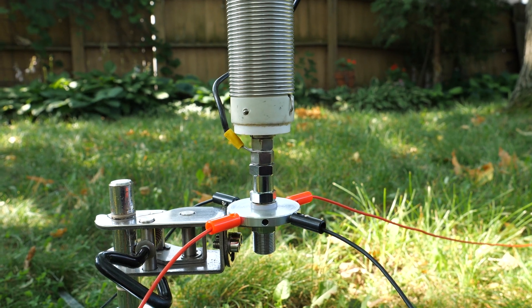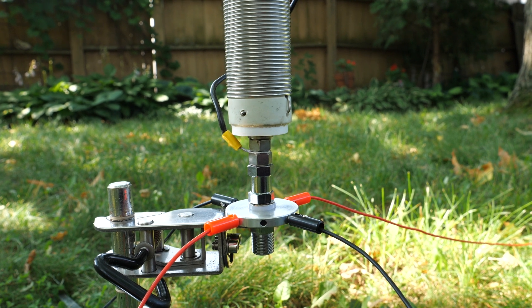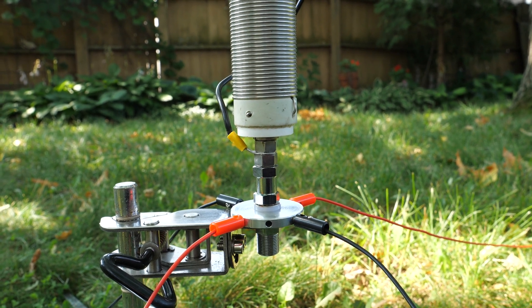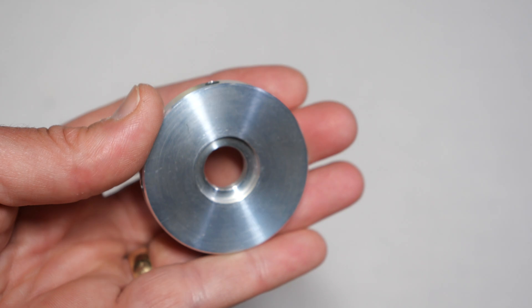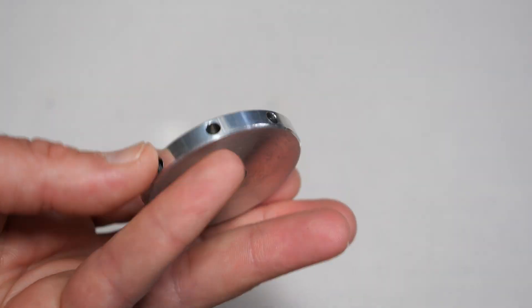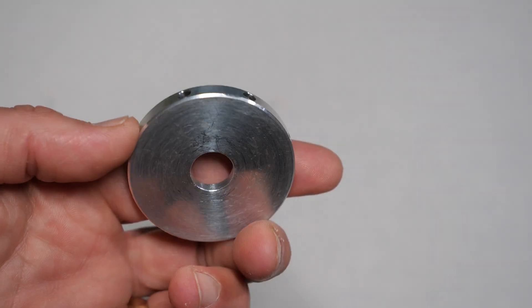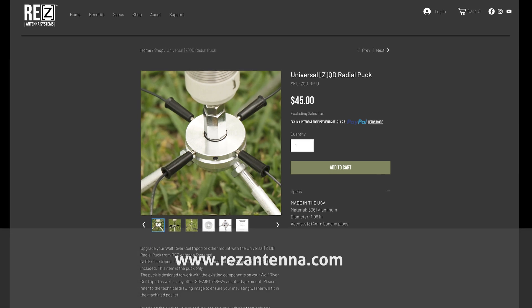When using it with the Wolf River coil, adding the puck to your antenna system will make deploying radios faster and easier. The Rez Antenna Radio Puck is made in the USA and is available exclusively from RezAntenna.com. Links to the product are in the video description.